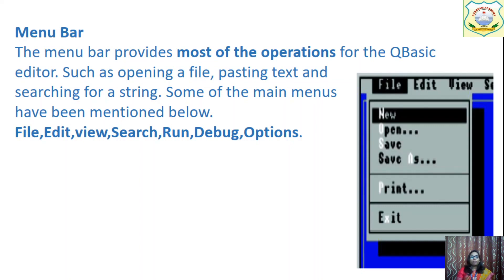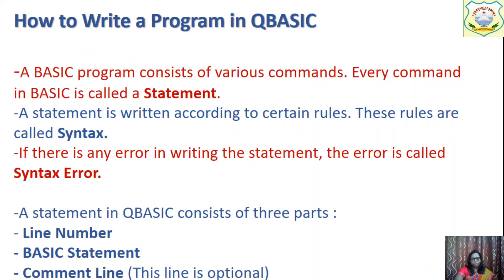The File menu has options like New, Open, Save, and so on. Similarly, we have the Edit menu, View menu, Search, Run, and Debug options. All of these have different operations.